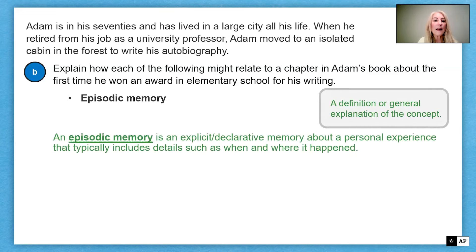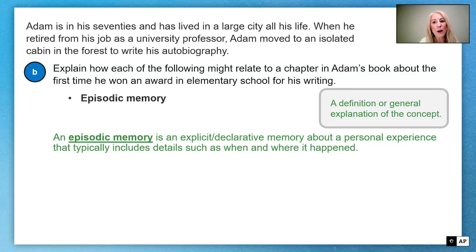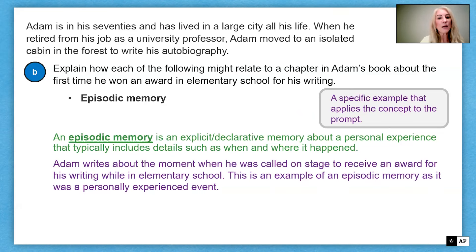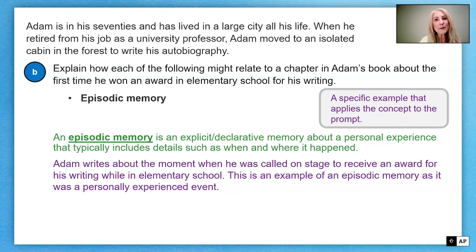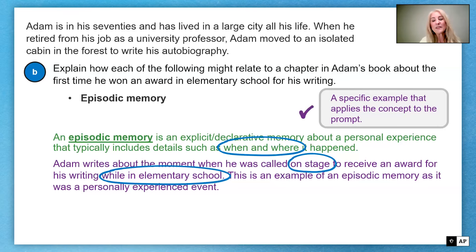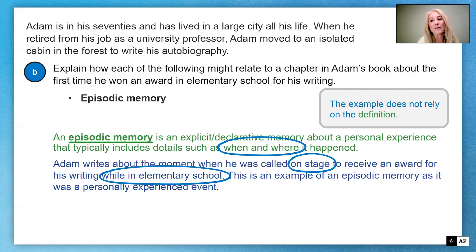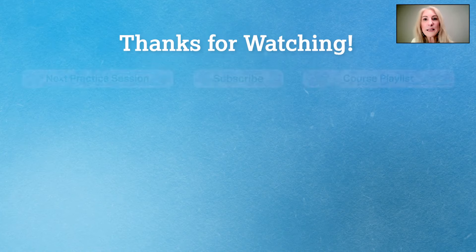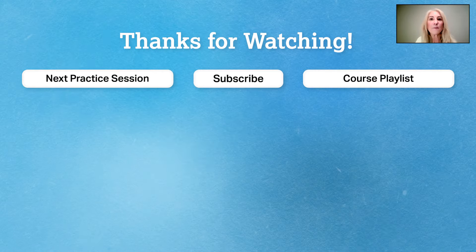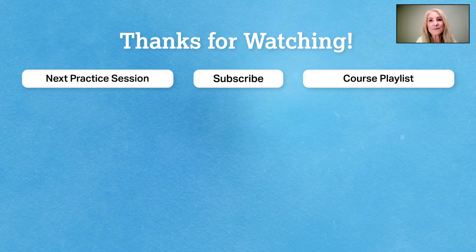Episodic memory is an explicit, declarative memory about a personal experience that typically includes details such as when and where it happened. The specific example: 'Adam writes about the moment when he was called on stage to receive an award for his writing while in elementary school.' This is an episodic memory as it was a personally experienced event, and it includes the when and where. Thank you for going through this concept application FRQ and we hope to see you at another episode of AP Psychology Review. Have a great day.